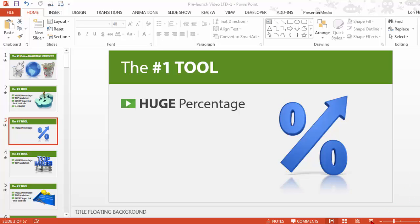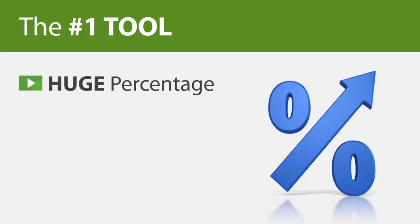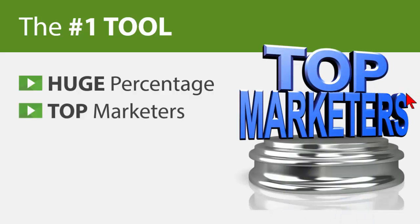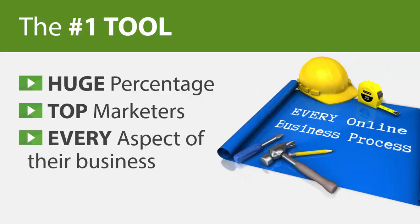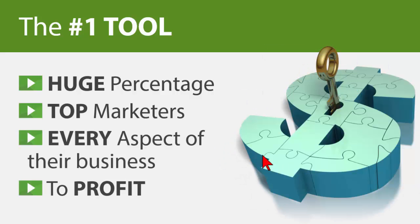Watch how this goes. I'll go into slideshow mode, and the first bullet comes in with its image. I'm going to click, and you'll notice that the second bullet comes in and this image fades in, replacing the other one. And then it does it again — I click, and it does it again.